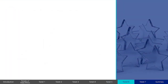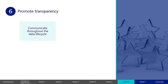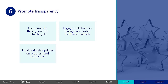The sixth tenet of data ethics is to promote transparency. Individuals, organizations, and communities benefit when the decision-making process is as transparent as possible to stakeholders. Transparency depends on clear communication of all aspects of data activities throughout the entire data lifecycle. Promoting transparency requires engaging stakeholders through easily accessible feedback channels, and providing timely updates on the progress and outcomes of data use. Transparency also includes standard processes and documentation when correcting previously reported data that might contain errors, including providing explanations of what was inaccurate and how it was corrected.